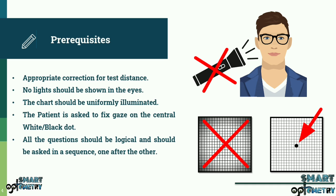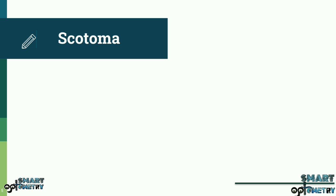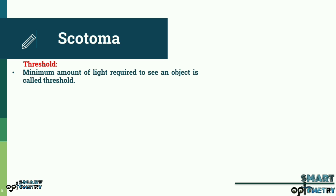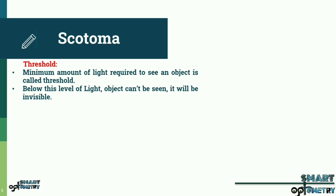Before starting the procedure, we need to know about scotoma. To understand scotoma, we need to know about threshold. Threshold is the minimum amount of light required to see an object. Below this level of light, an object cannot be seen — it will be invisible.